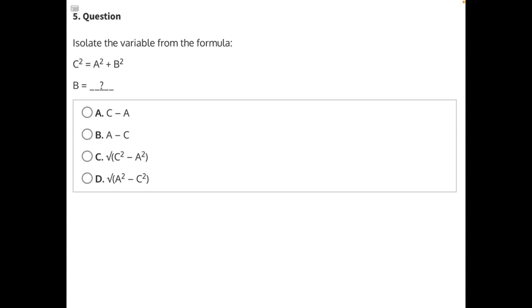Isolate the variable from the formula. In order to do this we need to take everything that's not this variable b and move it to the other side of the equal sign, including this exponent here, so that b is completely isolated.